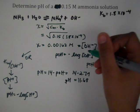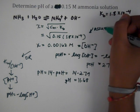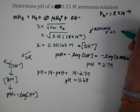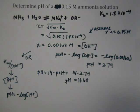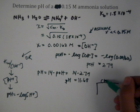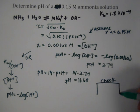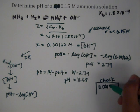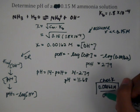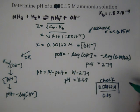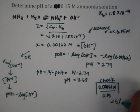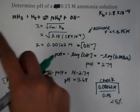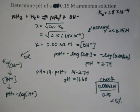Don't forget the assumption check. For this shortcut method, we assumed X is much smaller than 0.15. Our check is 0.00162 divided by 0.15 as a percentage. That percentage is very small, less than 5%, so our assumption is valid. Make sure to check this even if you use the ICE table method.